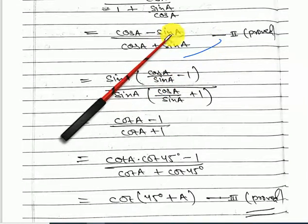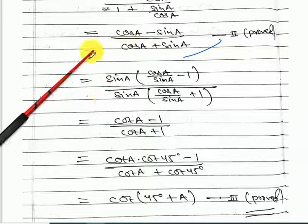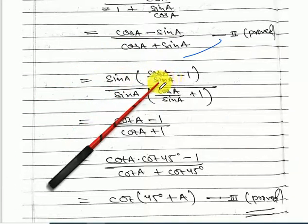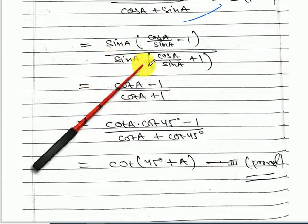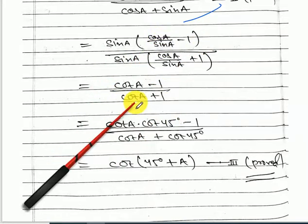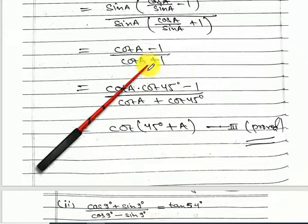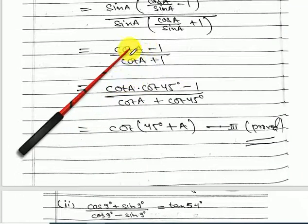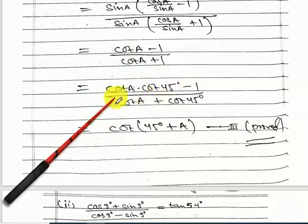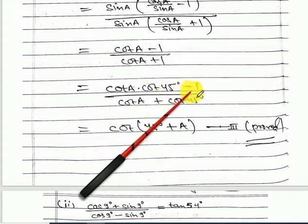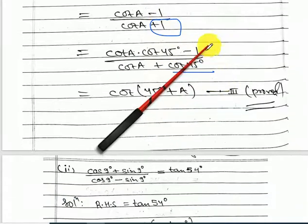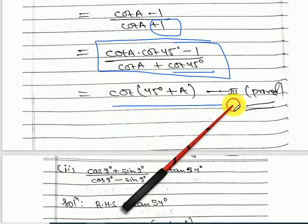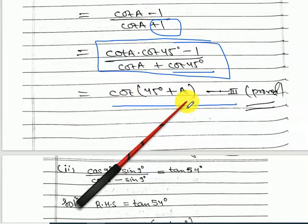Now show equality with cot(45 plus A). From part 2, take sin A as common in numerator and denominator. You get (cot A minus 1) upon (cot A plus 1). Write 1 as cot 45, so numerator becomes cot A times cot 45 minus 1 and denominator becomes cot 45 plus cot A, which is cot(45 plus A). Third part is proved.